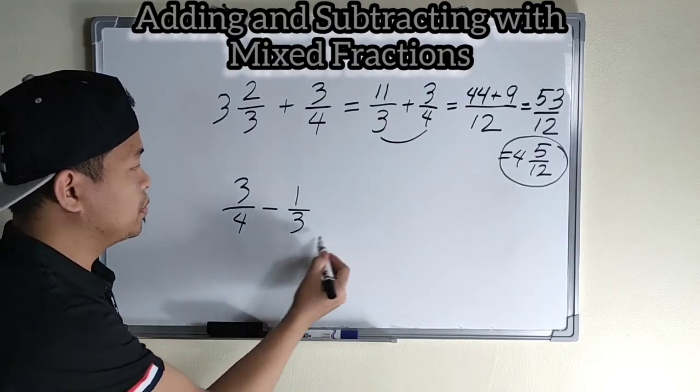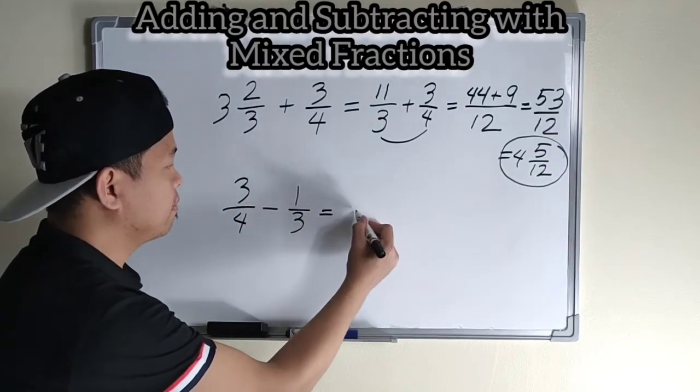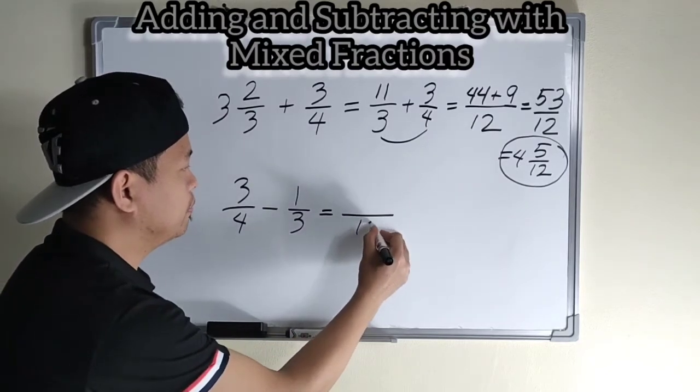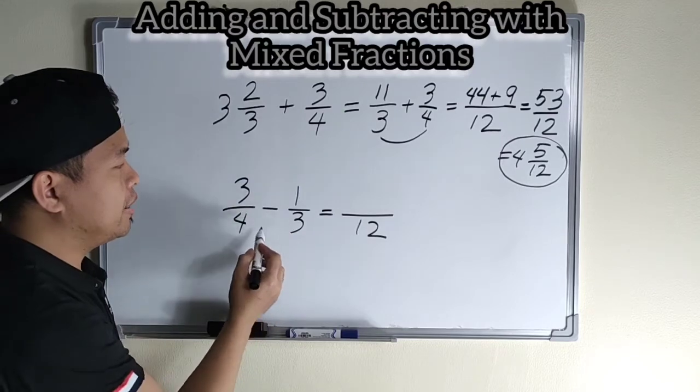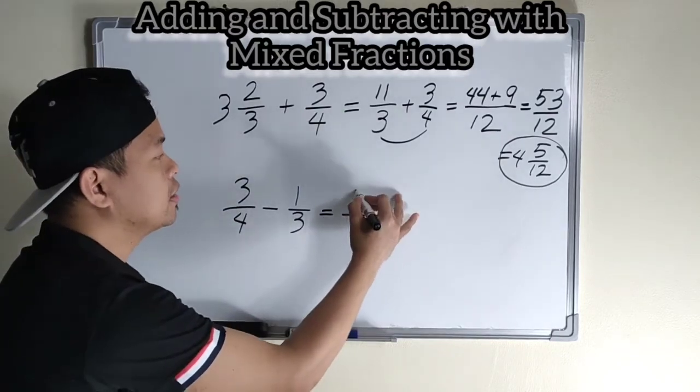Multiply sa baba. We have twelve. Four times six is twelve. Then, cross multiply. Three times three is? Nine.